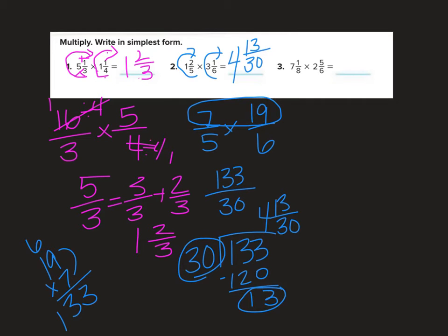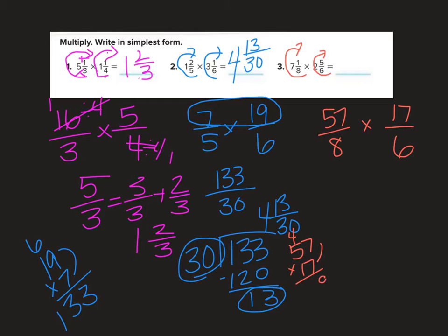Let's do the last one. I'm going to circle up: seven times eight is fifty-six, plus one more is fifty-seven eighths. Times: six times two is twelve, plus five is seventeen-sixths. These are nasty. So fifty-seven times seventeen: seven times seven is forty-nine, seven times five is thirty-five, that's thirty-nine. Add a zero: one times seven is seven, one times five is five. Adding them together I get nine hundred sixty-nine over eight times six is forty-eight.